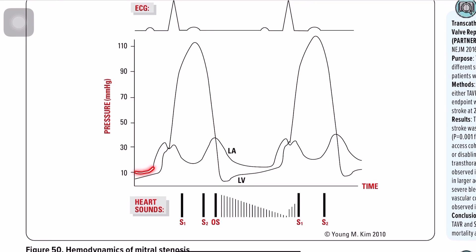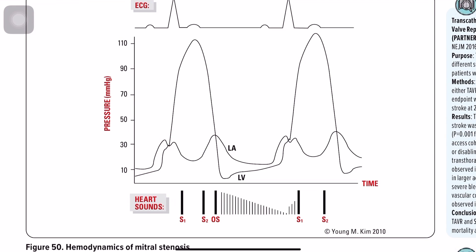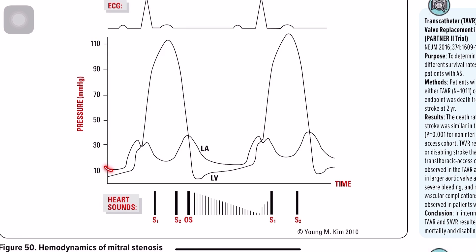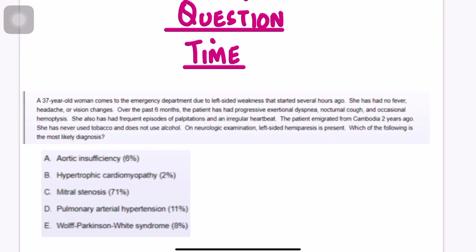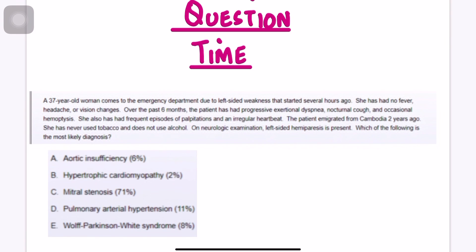A key graph to recognize shows left atrial pressure exceeding left ventricular pressure during diastole. Normally left atrial pressure should be around 4 to 12 mmHg, but in mitral stenosis it exceeds even left ventricular diastolic pressure. If you see a pressure graph where left atrial pressure during diastole is higher than left ventricular pressure, this represents mitral stenosis.